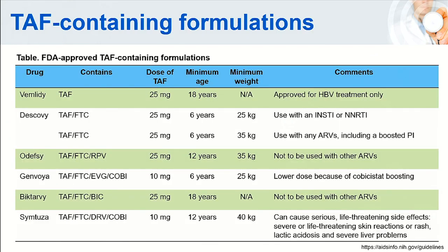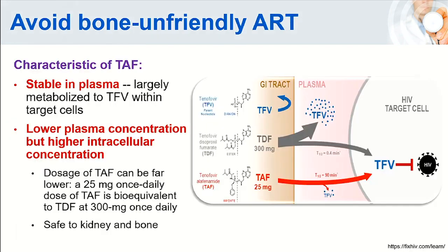TAF has several fixed-dose combination regimens available. For TAF monotherapy, it is not approved for HIV treatment—only for hepatitis B. TAF's safety for bone stems from its different characteristics compared to TDF: TAF is very stable in plasma and metabolizes in the target cell. With lower plasma concentration and higher intracellular concentration, the dose of TAF is much lower—25 mg per day compared to TDF's 300 mg per day (or just 10 mg when used with cobicistat)—which spares the kidneys and bones.